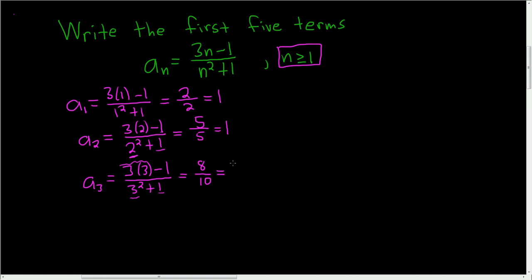This can be simplified. You divide the 8 by 2, that gives you 4, and divide the 10 by 2, that gives you 5.